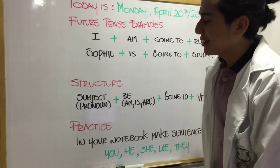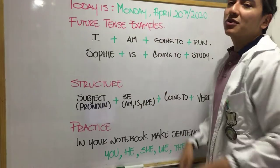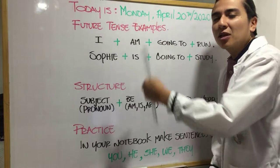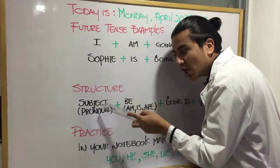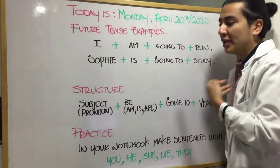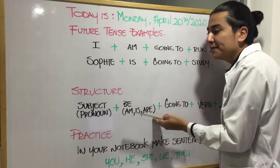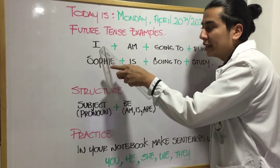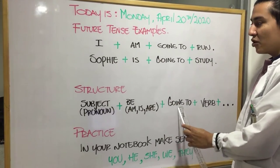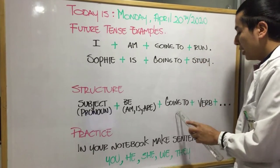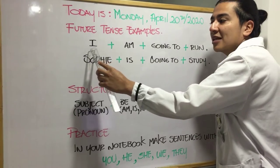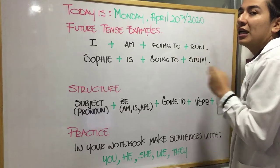It's time to practice! We're going to check the structure using examples. For the subject pronoun I, we use the verb to be am, giving us I am, then going to, and then the verb. The verb is run, so the complete sentence is: I am going to run — in the future.